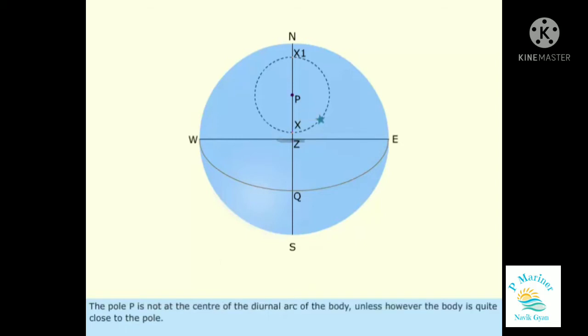The pole P is not at the center of the diurnal arc of the body, unless however the body is quite close to the pole. X is the upper meridian passage when the body is between the pole and the zenith. X1 is the lower meridian passage, in other words, the body is between the pole and the horizon.